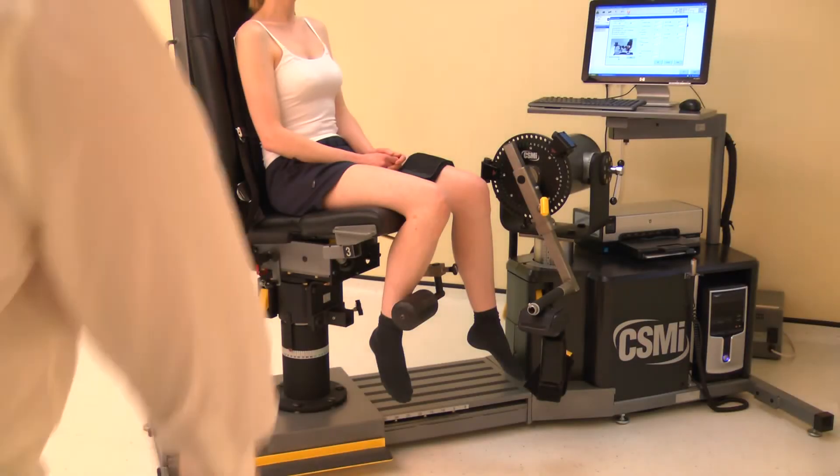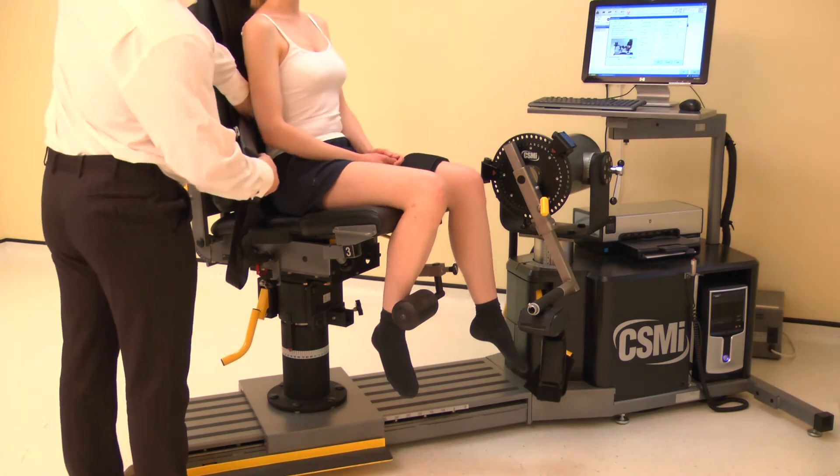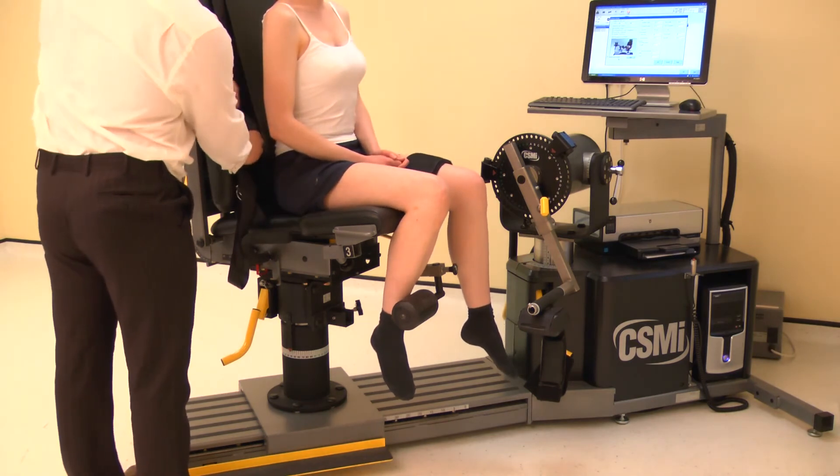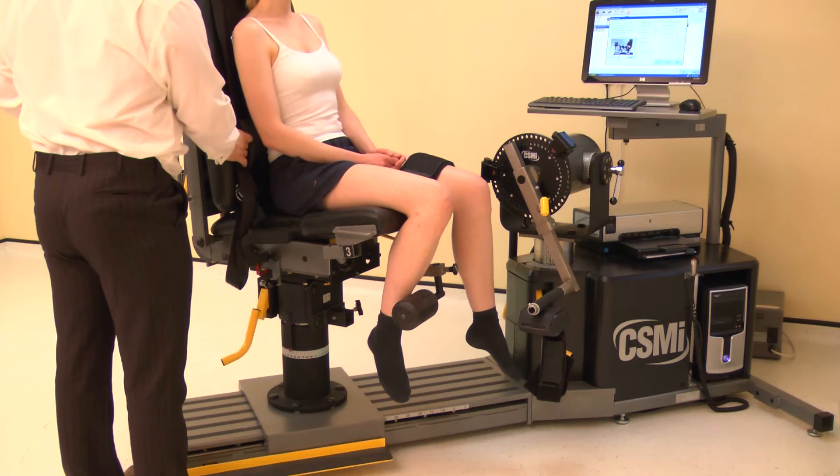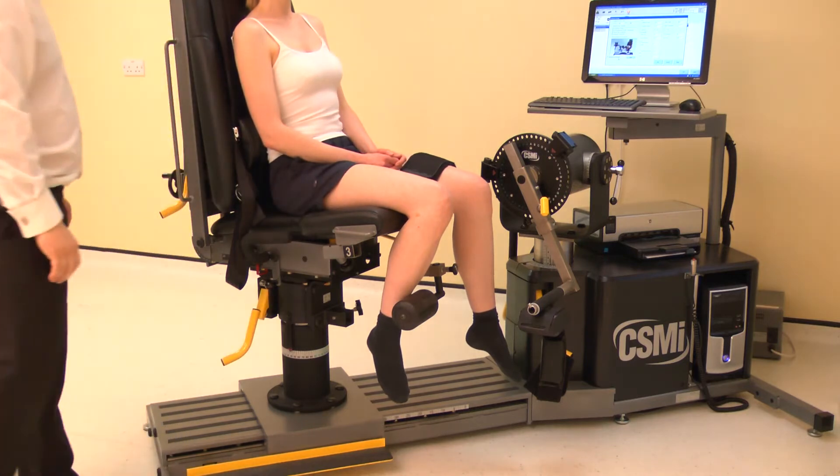The contralateral limb stabilizer, lumbar cushion and chest straps are all optional in knee testing. To use the lumbar cushion, position the subject first, then apply the lumbar cushion behind the subject and the lumbar lordosis.